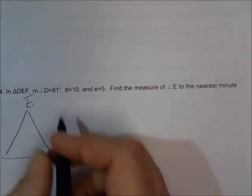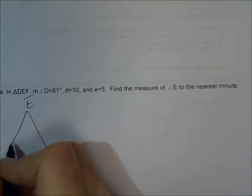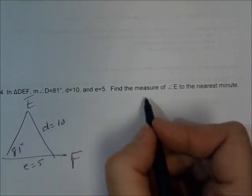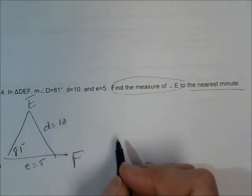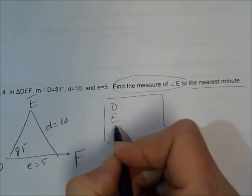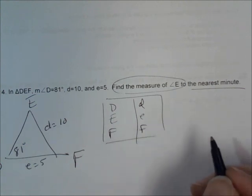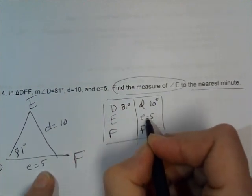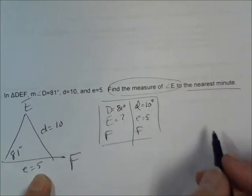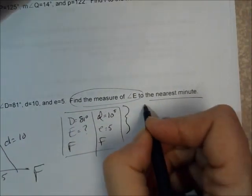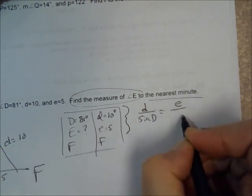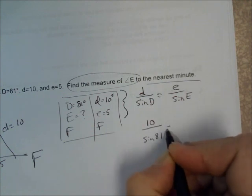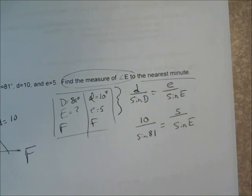In triangle DEF: D is 81 degrees, little d is 10, little e is 5, and we want to find angle E to the nearest minute. Setting up the chart: big D is 81 degrees, little d is 10, and little e is 5. We don't know big E — that's what they want. Using the law of sines: D over sine of D equals E over sine of E. So 10 over sine of 81 equals 5 over sine of E.